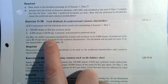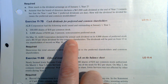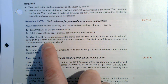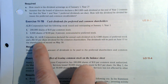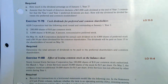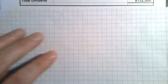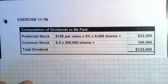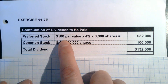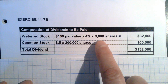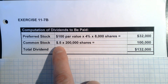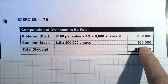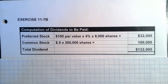On May 10th, ALR Corporation declared an annual cash dividend on its 8,000 shares of preferred stock — paying out 4% of $100 for those 8,000 shares — and a $0.50 per share dividend for all common shareholders. For preferred stock: $100 par times 4% times 8,000 shares equals a payout of $32,000. For common stock: $0.50 per share times 200,000 shares is $100,000. So they'll pay out $132,000 total.